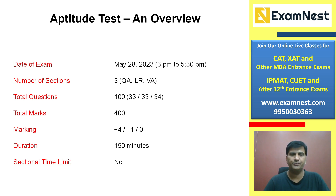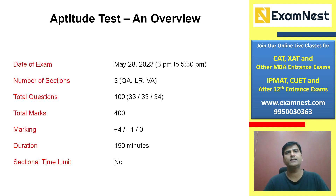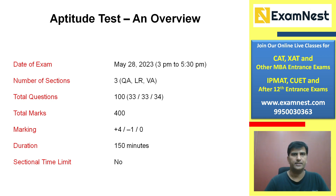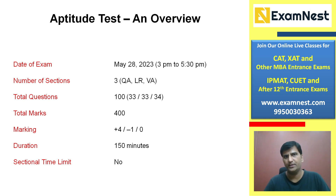Timing थे 3 to 5:30, total 150 minutes मिले थे। Paper 3 sections में divided था: Quantitative Aptitude, Logical Reasoning and Data Interpretation, और Verbal Ability and Reading Comprehension। Questions की संख्या: QA और LR में 33-33 questions और Verbal Ability में 34 questions। कोई sectional time limit नहीं थी।